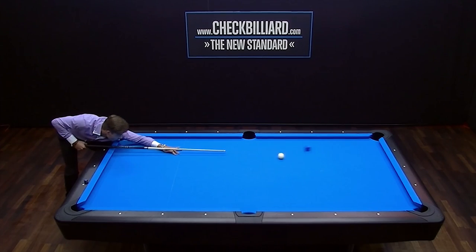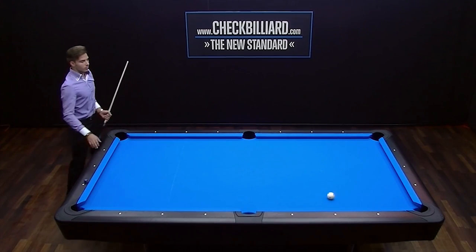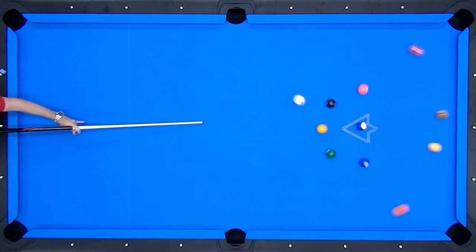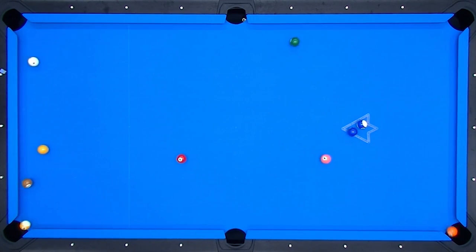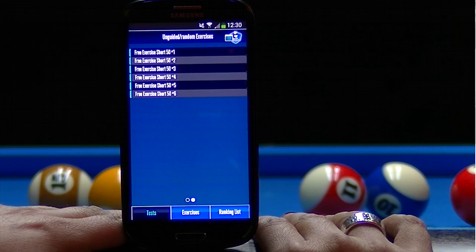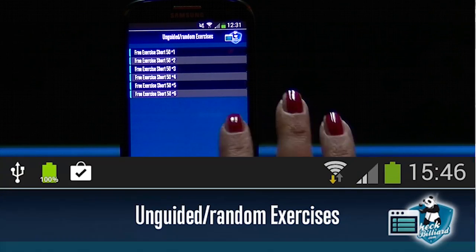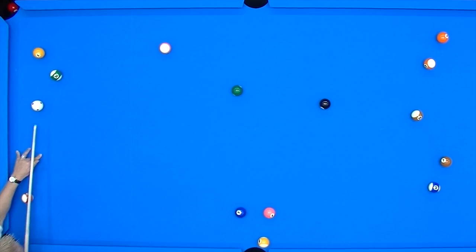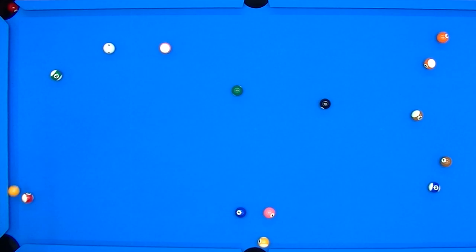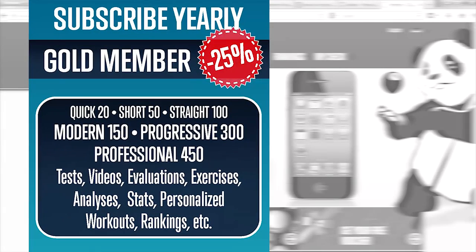After you've completed either the Short 50 or the Straight 100 section, Check Billiard has already started to gather information about how you play, and you'll be offered a selection of basic training exercises. These training exercises are non-guided, meaning that we don't yet know enough about your exact skills to offer more specific exercises. These exercises will get you started, but you'll want to sign up as a Gold member, where the personalized training really takes off.